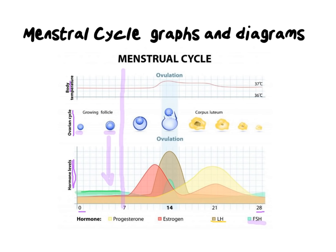Moving further along to day 14, you'll notice a number of hormones are peaking. Estrogen is peaking just before day 14. Luteinizing hormone is also peaking dramatically. And if you look carefully in the green, follicle-stimulating hormone is also peaking. This is a very important process to understand.